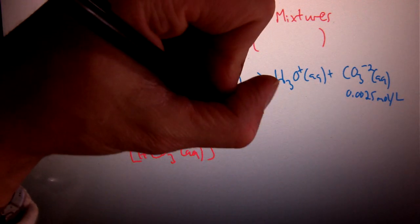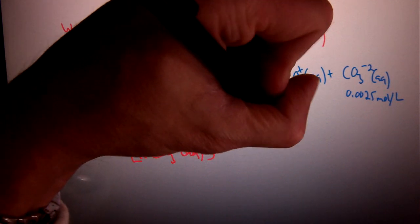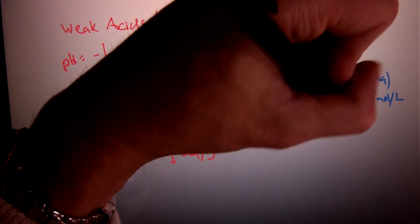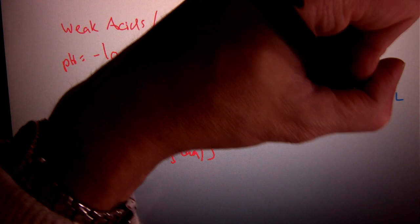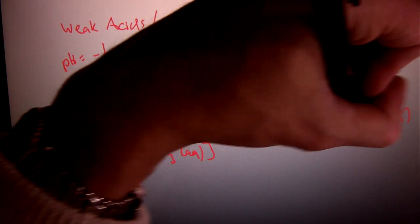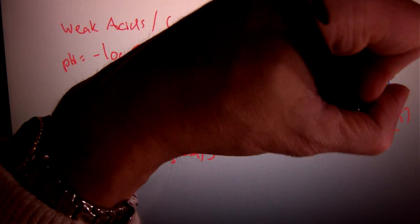So, in this case, we know the Ka from our data table is 4.7 times 10^-11. H3O+ would be our unknown. Carbonate was given as 0.0025, and bicarbonate was given as 0.10.